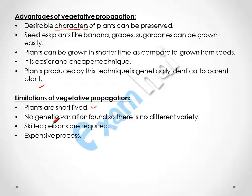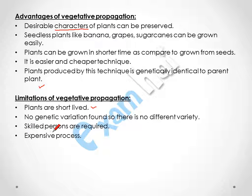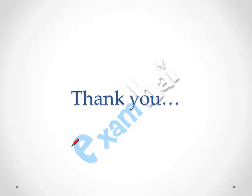Some limitations: plants are short-lived; the life span of a plant is very short. There is no genetic variation, so there is no different variety — if you want two varieties in the same plant, that cannot be achieved because there is no genetic variation. Skilled persons are required — a very trained person is needed for this technique — and the process is expensive. Thank you for watching this video.